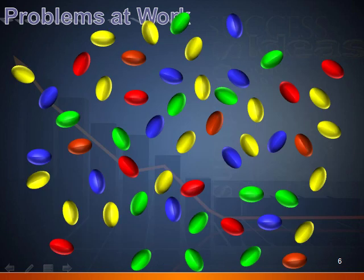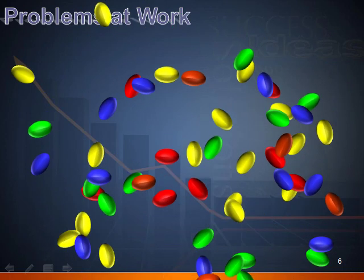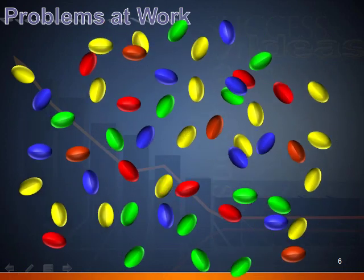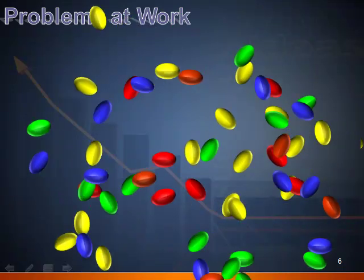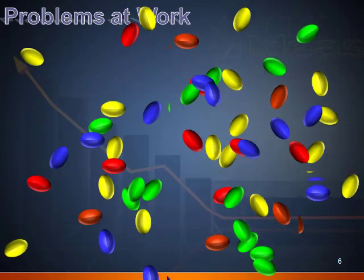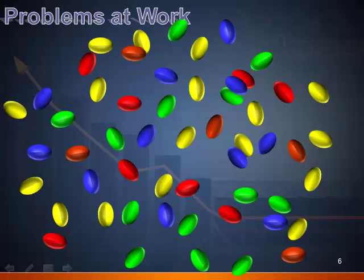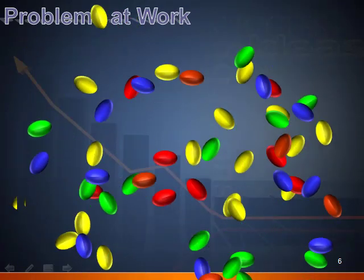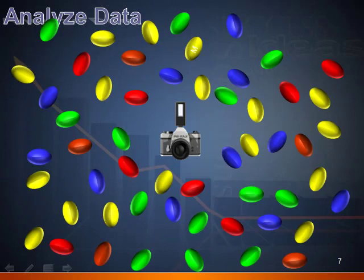Let's pretend that each different color candy is a different problem that you face in your job, and these represent one week's worth of problems. Our days are so rushed that it can be quite confusing to make any sense out of our problems. Sometimes it's hard to know just where to start. To take advantage of the power of the Pareto Principle, you need to take a few minutes out of your busy day to take a snapshot of the problems you are having.